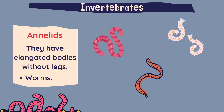Let's have a look at the last two groups. First, the annelids: they have elongated bodies without legs. Their bodies are segmented so they can move. This group is mostly formed by worms.